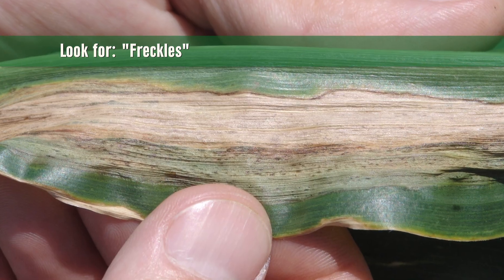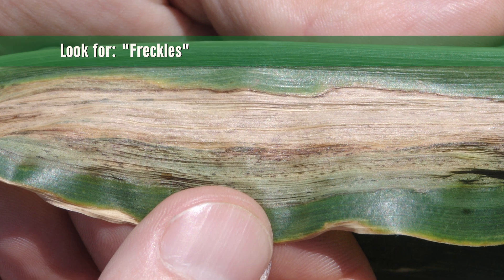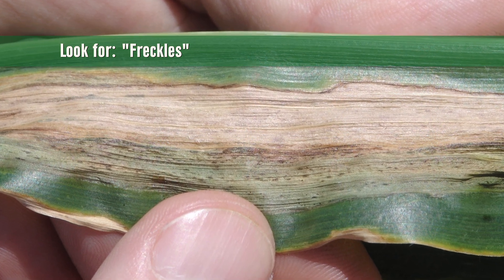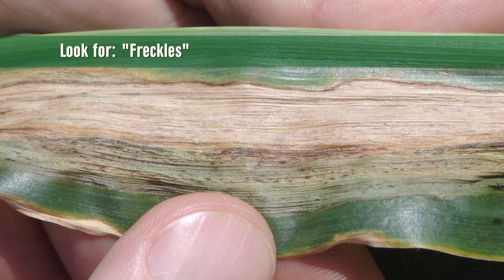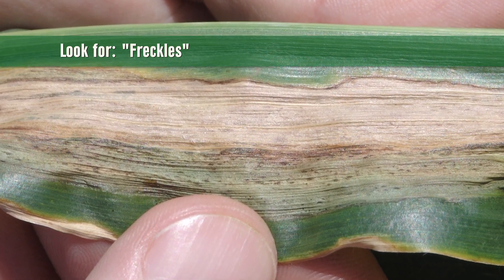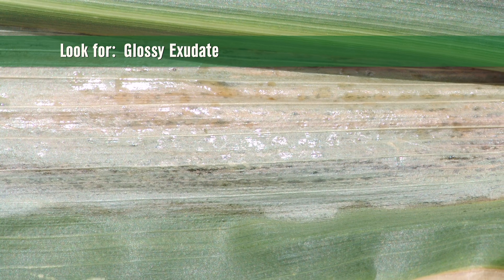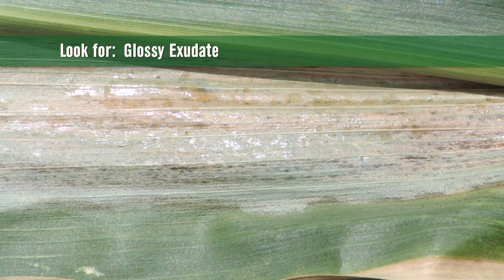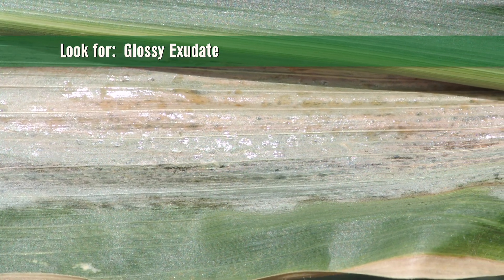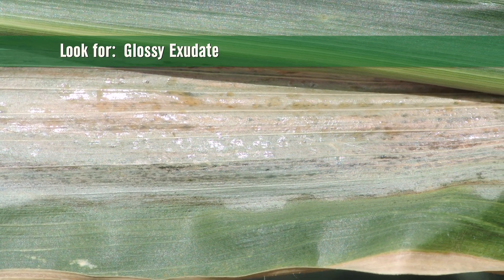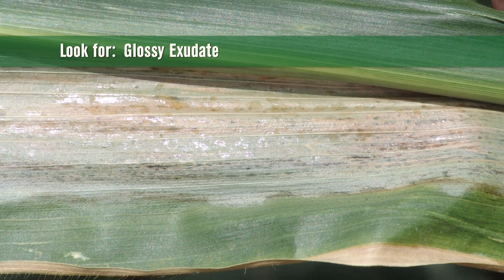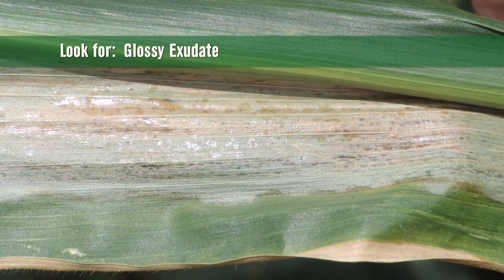The dark green or black freckles are a key diagnostic feature, and as the lesions grow larger and larger, you may also see the development of a glossy surface on the lesion.